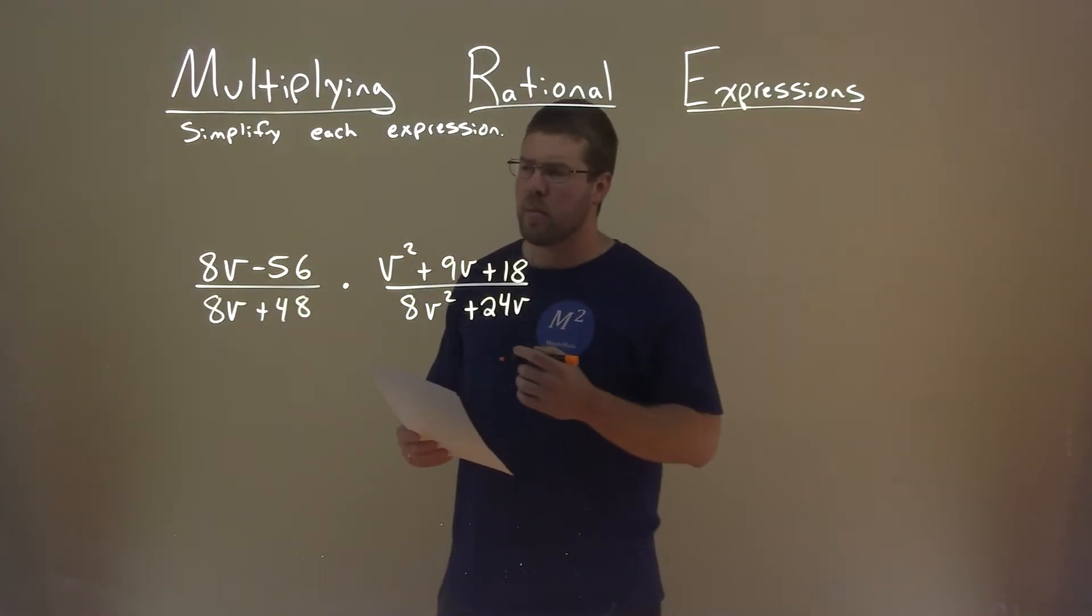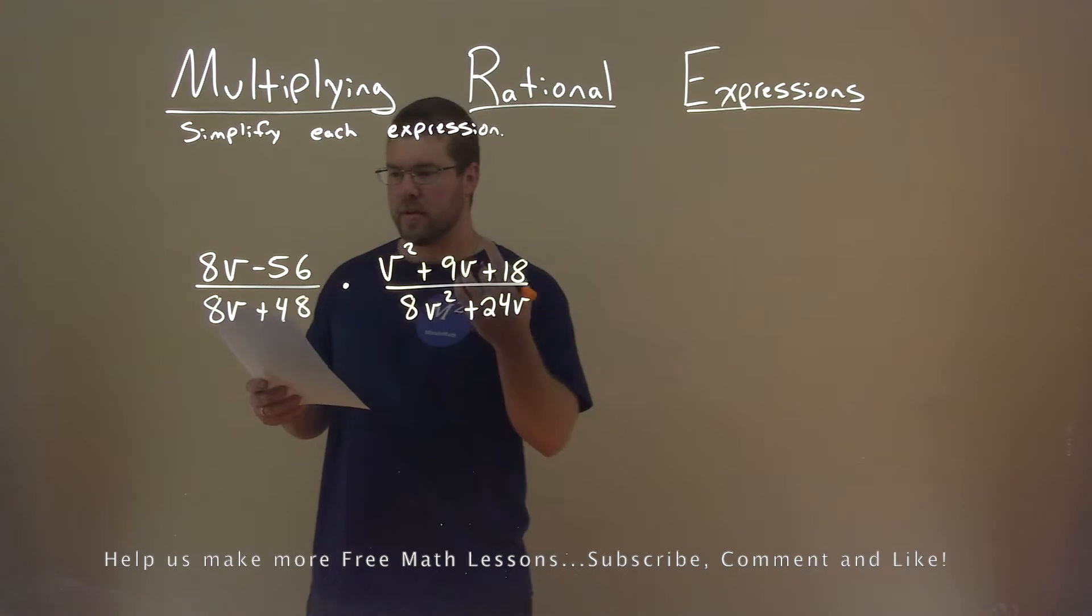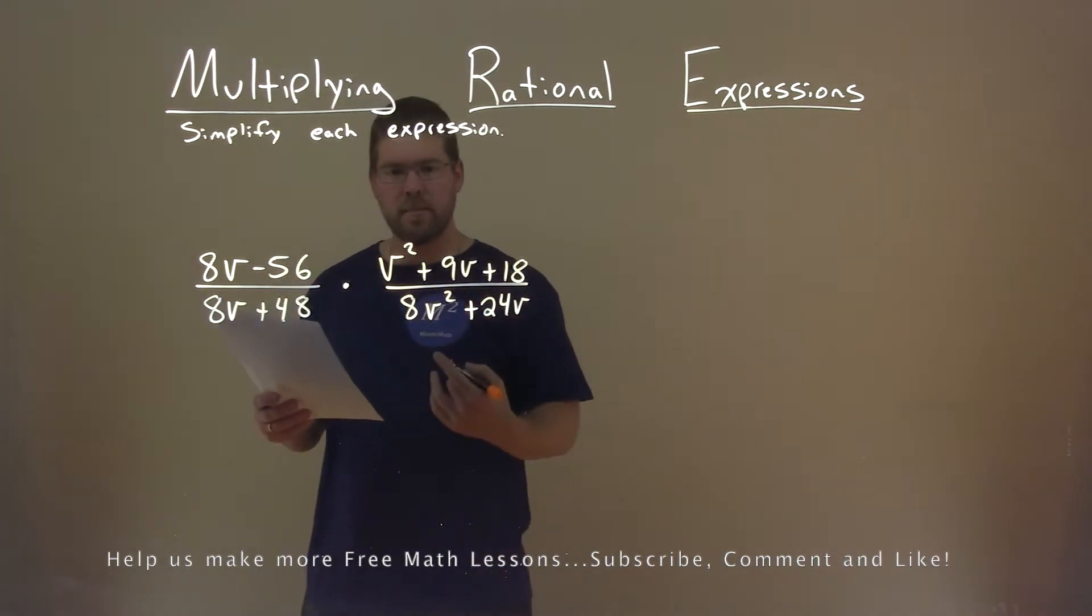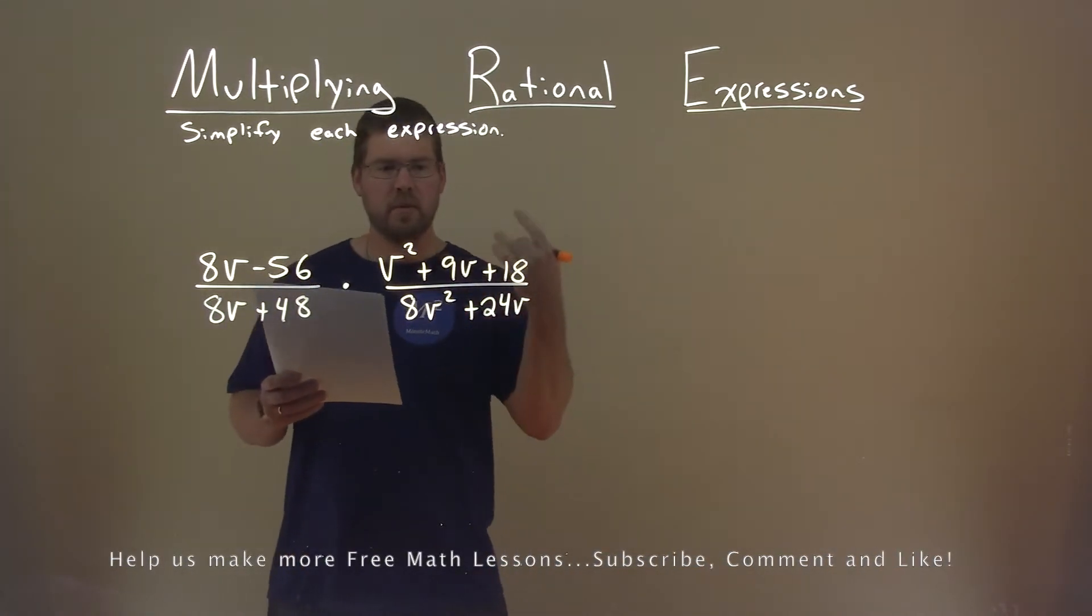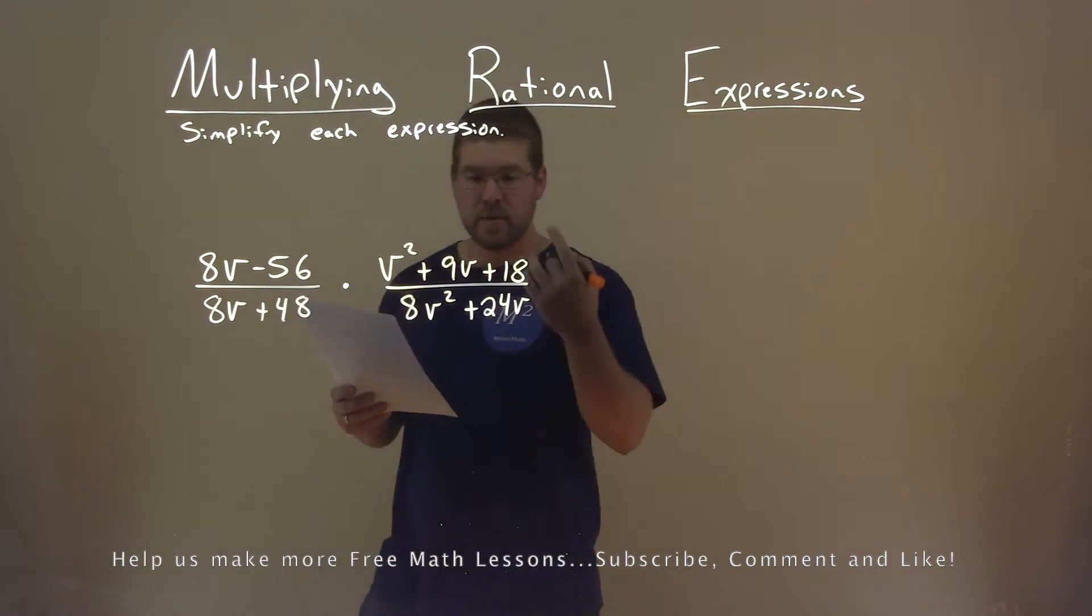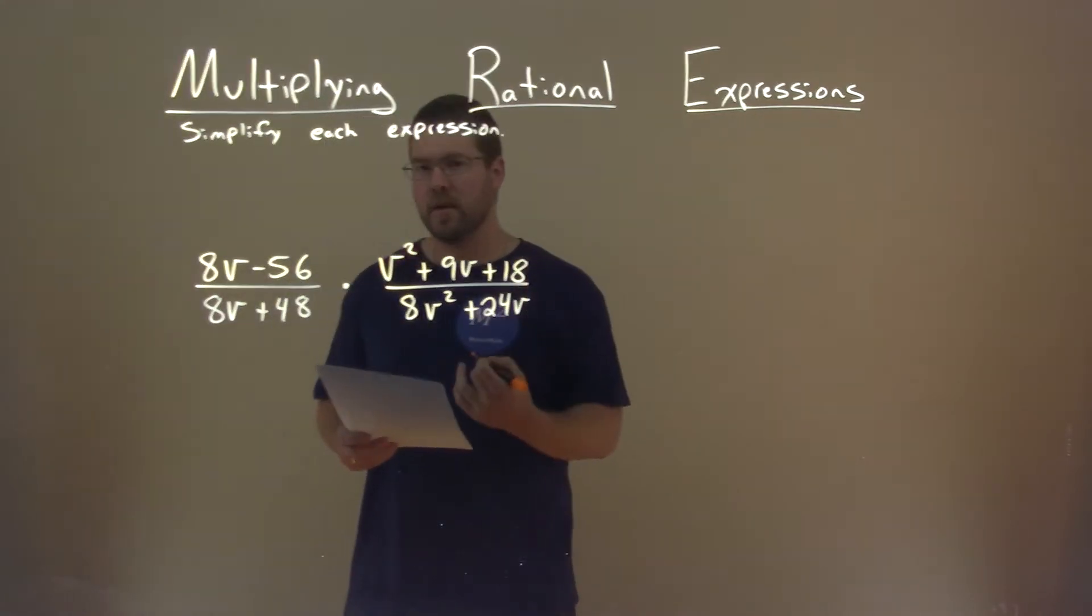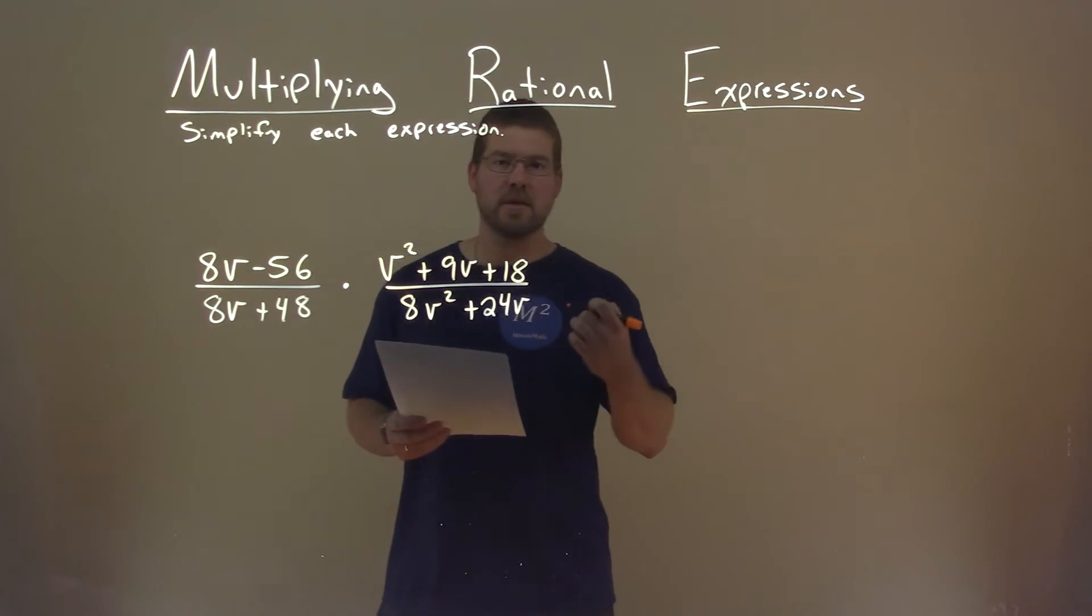We're given this problem right here. 8v minus 56 divided by 8v plus 48 times v squared plus 9v plus 18 divided by 8v squared plus 24v. And we want to simplify this expression.